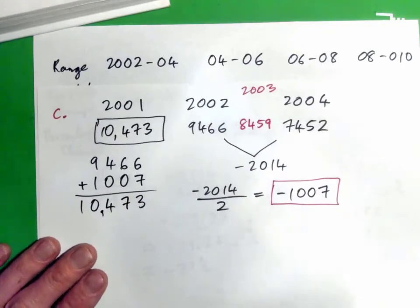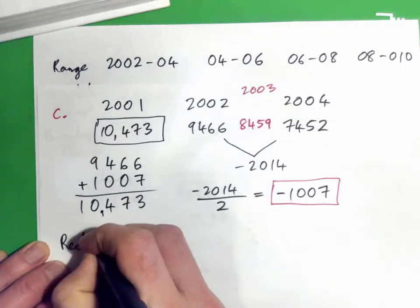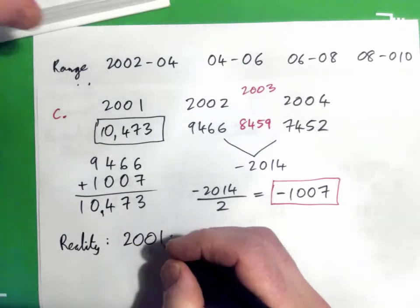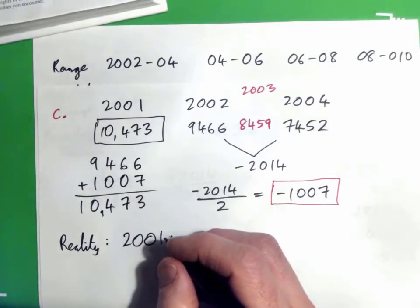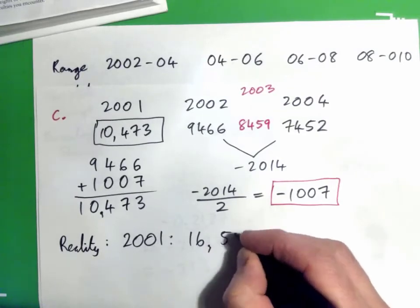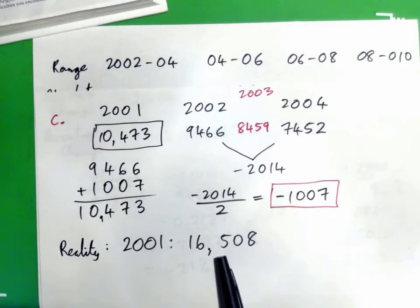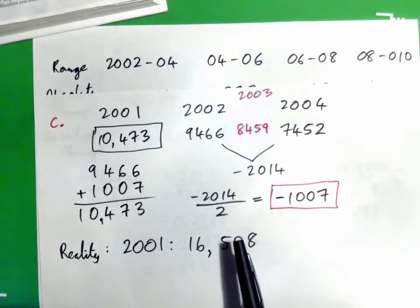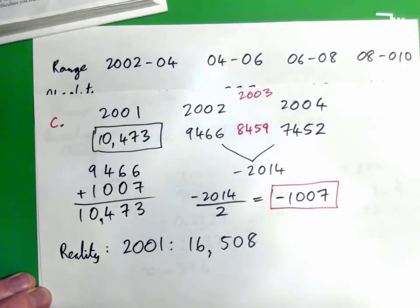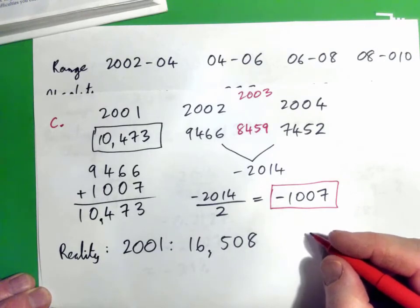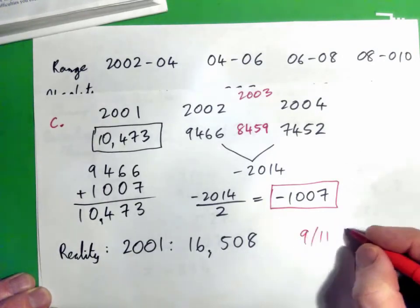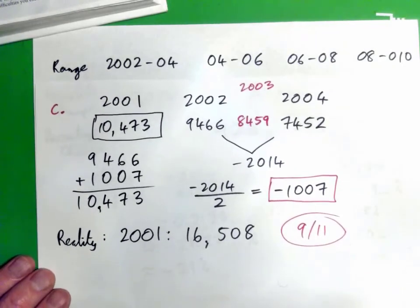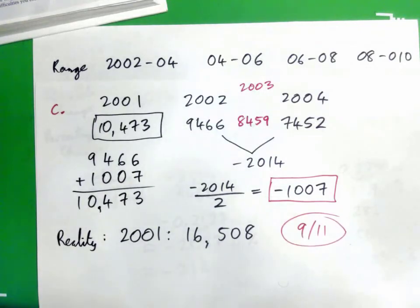That's our estimate, but it's just an estimate. In reality in 2001 there were apparently a lot of complaints — 16,508 airline complaints. Why is that number so much higher than what we would expect? Because 9/11 happened in 2001. All sorts of airline complaints arose then, along with insane security at all the airports and everything else.